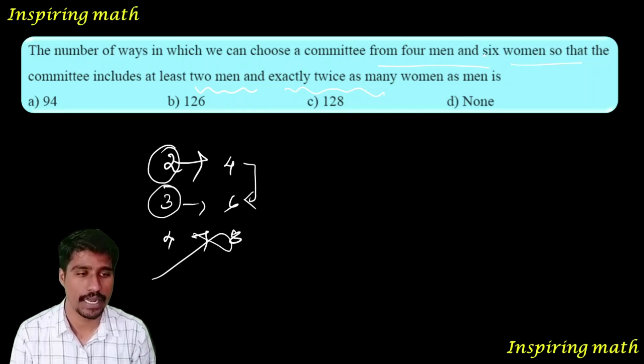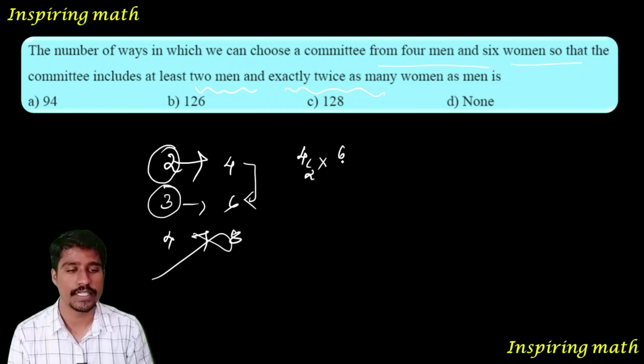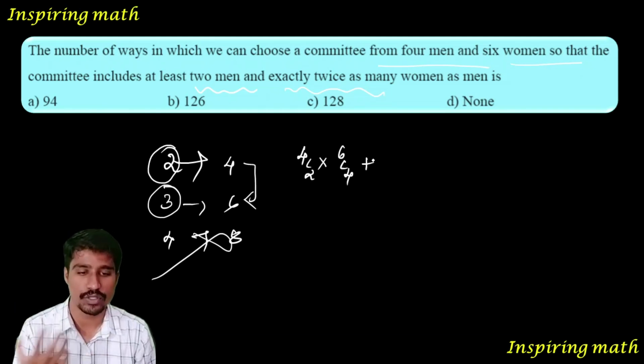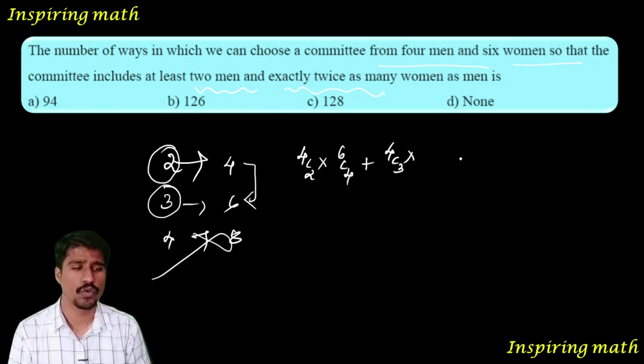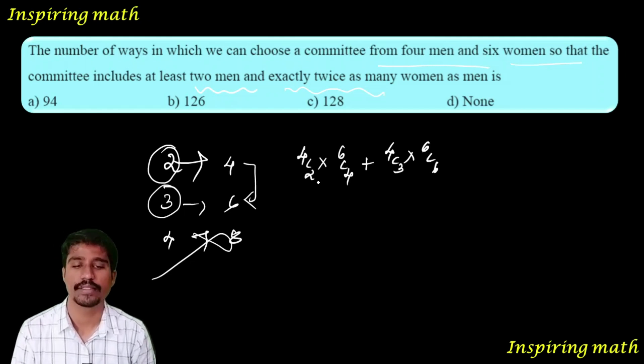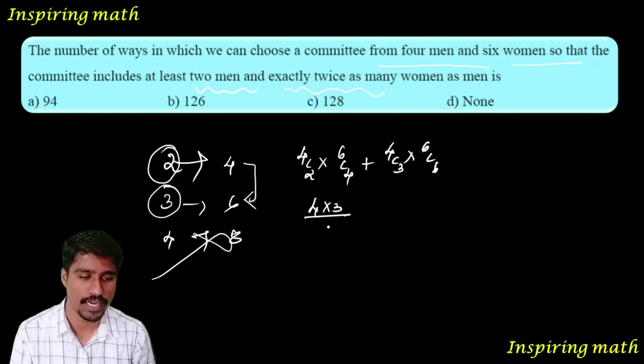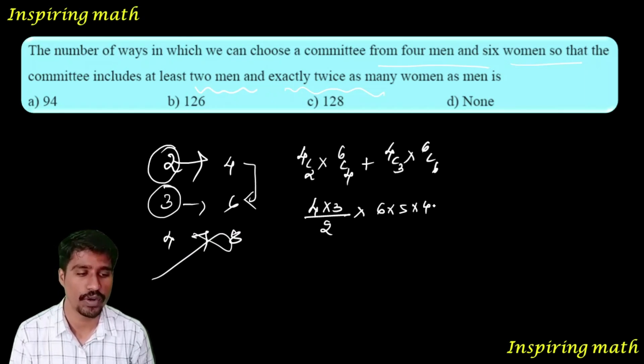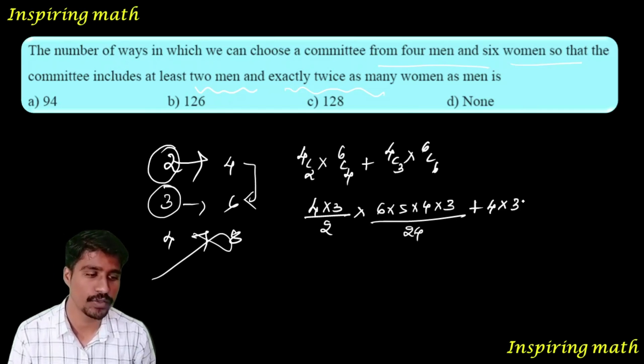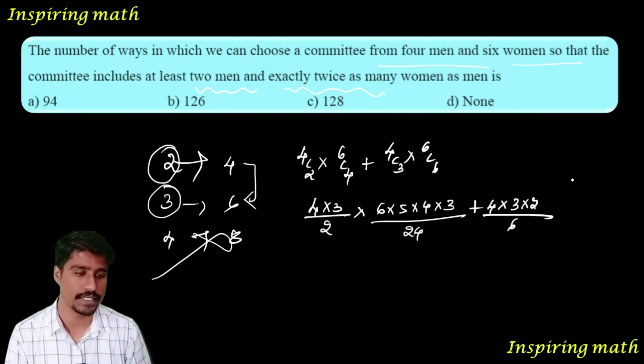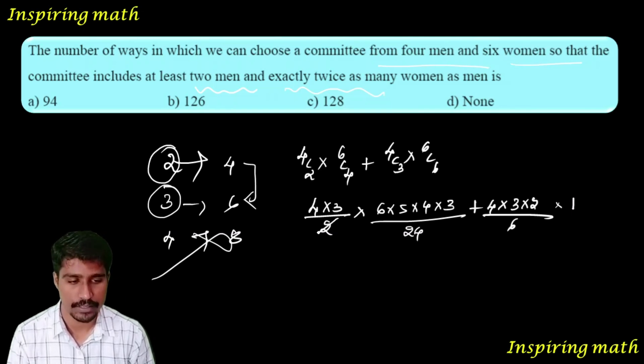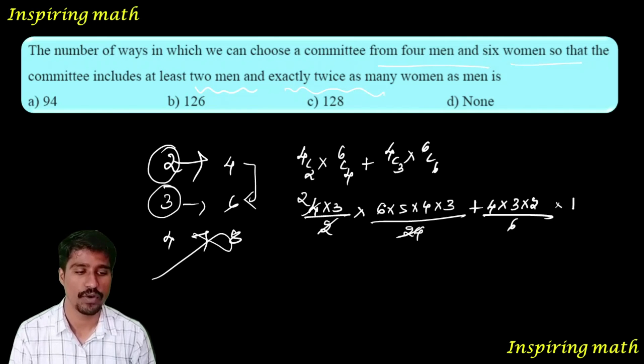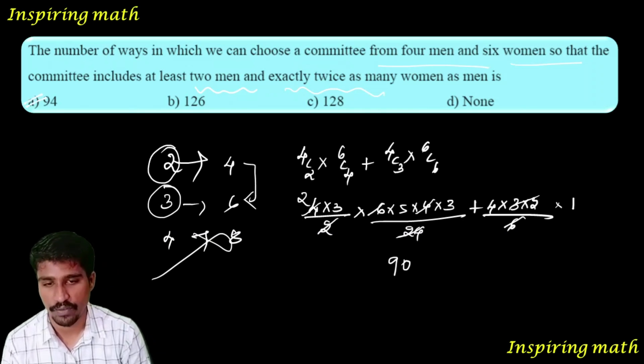So 2 men out of 4 is 4C2 times 6C4, plus 3 men is 4C3 times 6C6. Calculate: 4C2 is 4 into 3 divided by 2, 6C4 is 6 into 5 into 4 into 3 divided by 24. 4C3 is 4, 6C6 is 1. That gives 90 plus 4 equals 94. Option A is your answer.